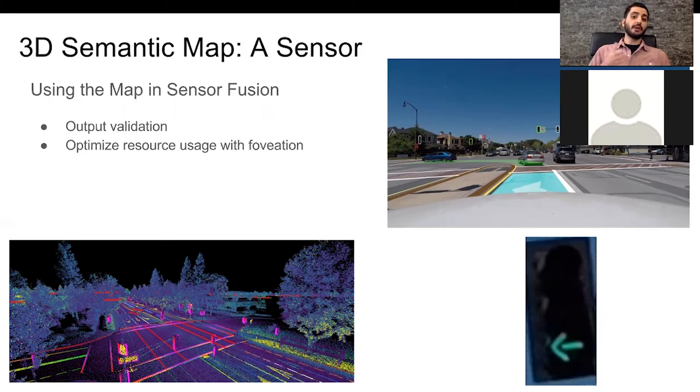If our application is to verify whether a signal is red or green, we don't have to look for the signal. We can just look into the map, figure out where the region of interest is in our image, and then analyze the pixels just in that region. That is the image on the bottom right of the slide.